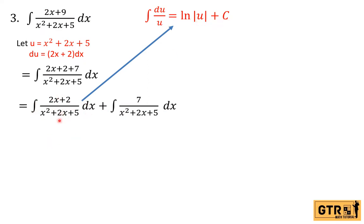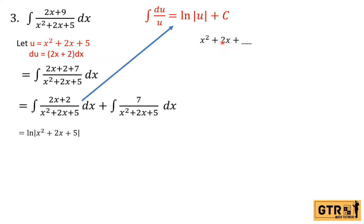So the answer to the first part is just ln(x² + 2x + 5). For the second part, we will solve this by completing the square. So we have x² + 2x, and we need to find the last term to make this a perfect square trinomial.